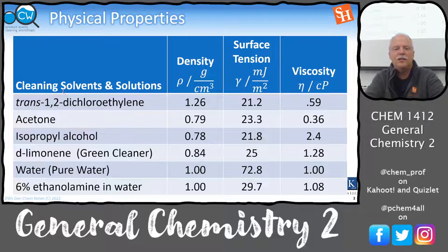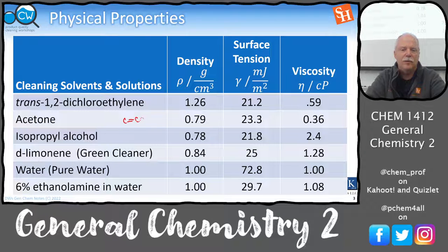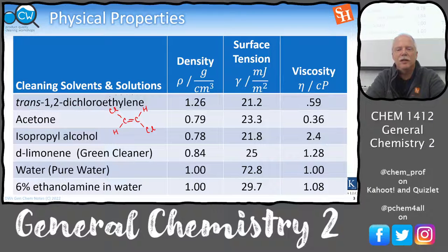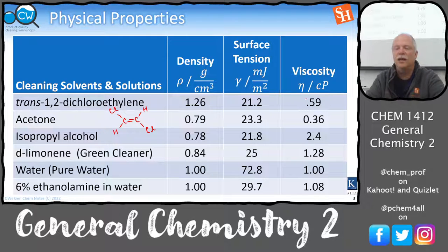This is one of the more modern solvents we use for cleaning: trans-1,2-dichloroethylene. The ethylene part is a carbon-carbon double bond; you have a hydrogen and a chlorine, and the 'trans' means they're on opposite sides of that double bond. This molecule is very popular in cleaning — it has a high density, higher than water; a low surface tension so it flows well into small spaces; and a very low viscosity. It's a great solvent.